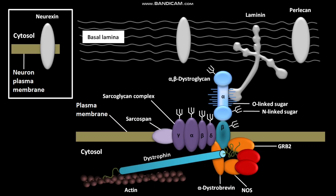NOS is associated through syntrophin with the cytosolic dystrophin sub-complex in skeletal muscle. Mutations in laminin or enzymes that add O-linked sugars to dystroglycan disrupt the DGC-mediated link between the exterior and the interior of muscle cells, resulting in muscular dystrophies.